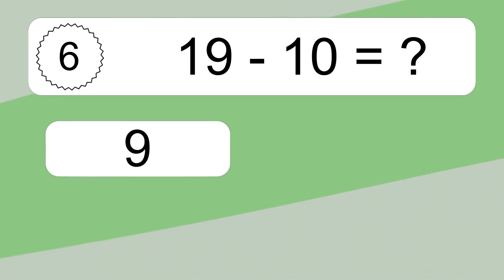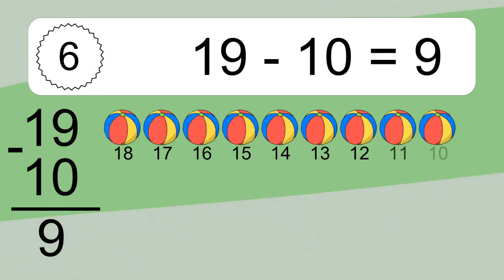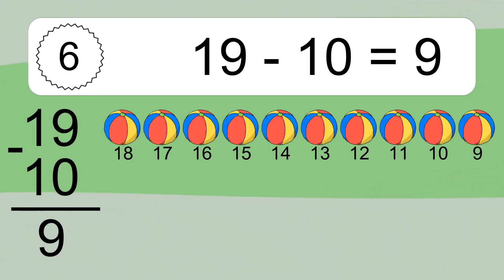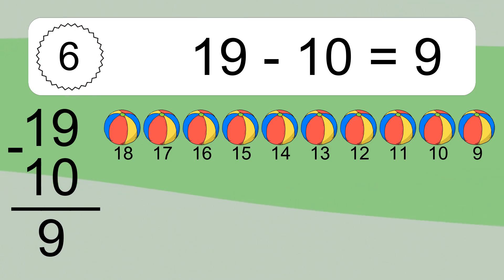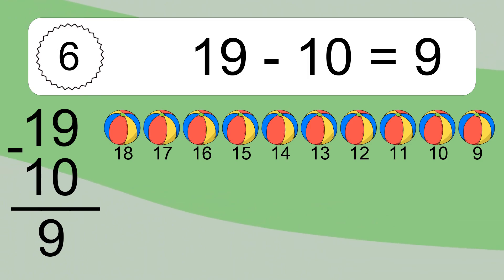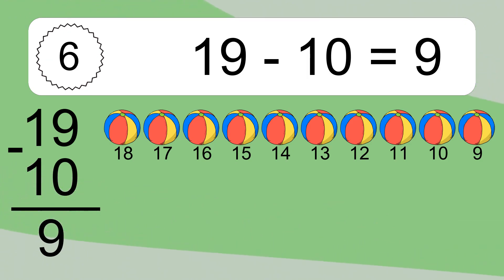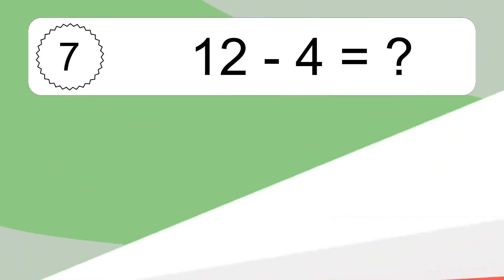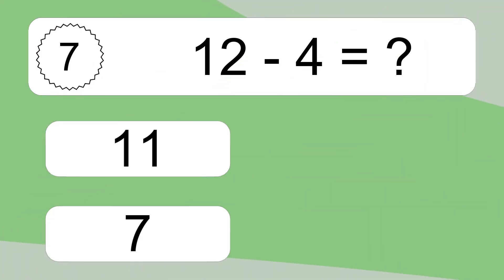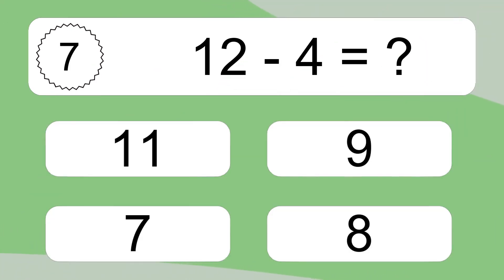19 minus 10 equals 9. Let's count it: 18, 17, 16, 15, 14, 13, 12, 11, 10, 9. 12 minus 4 equals what?